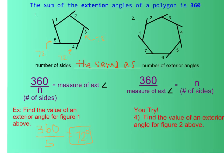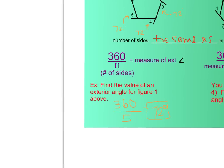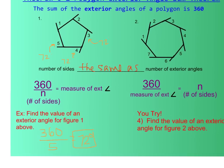If we went the other way — say they told you the exterior angle is 72 degrees and want to know how many sides — you'd just do 360 divided by 72, which gives you 5. So it tells you that you have a five-sided polygon. Now I'd like you to try the last 'you try' problem: find the value of the exterior angle for figure two above.